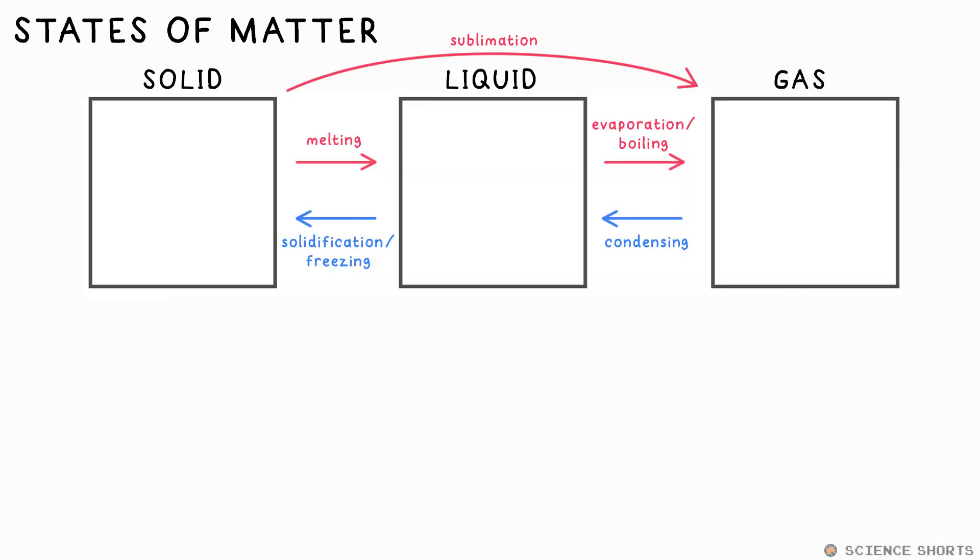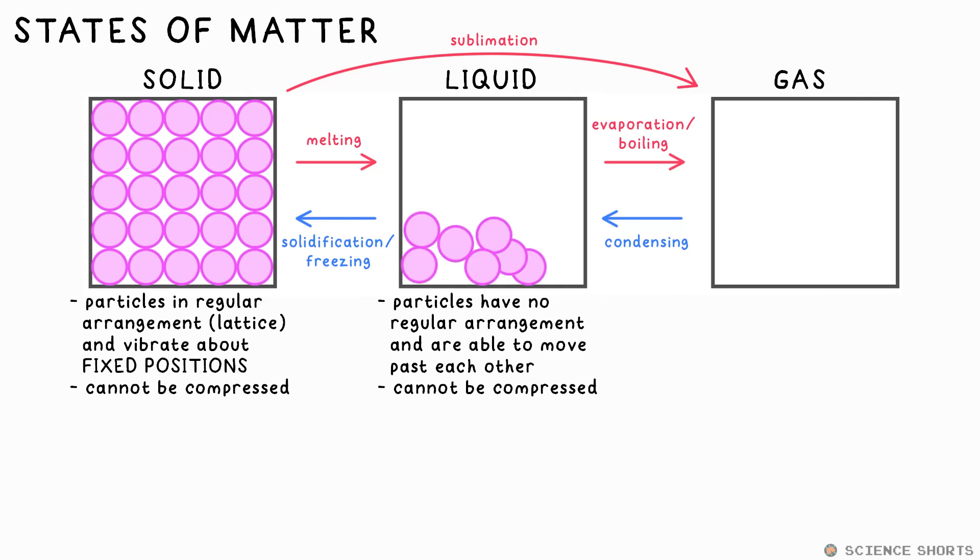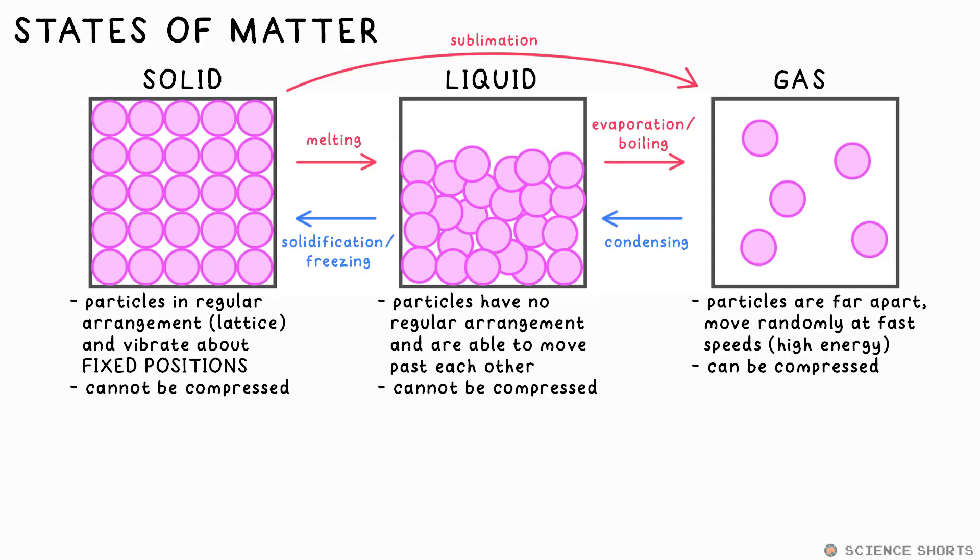Solid, liquid and gas are the three main states of matter. For example, water can be ice, a solid, where the particles vibrate about fixed positions. It can also be liquid water, where the molecules are still touching but are free to move past each other. And it can be gas, water vapour we call it when it's water, where the particles are far apart and move randomly, and they also have the most energy and so move quickly. As molecules in a gas are far apart, gases can be compressed, while solids and liquids cannot.